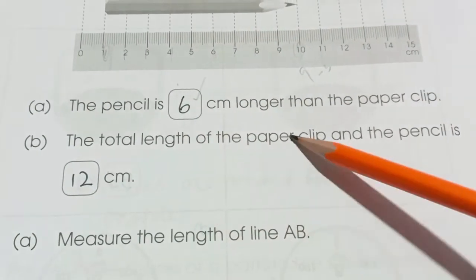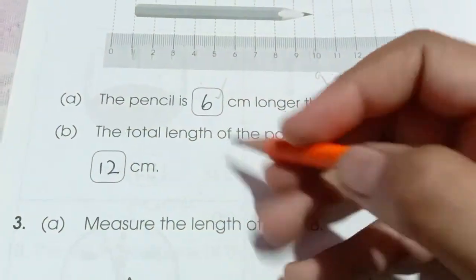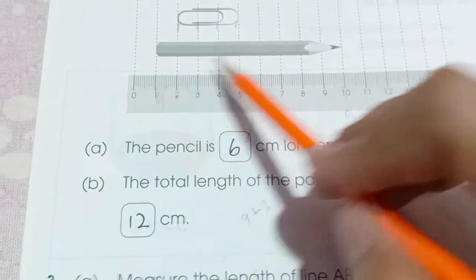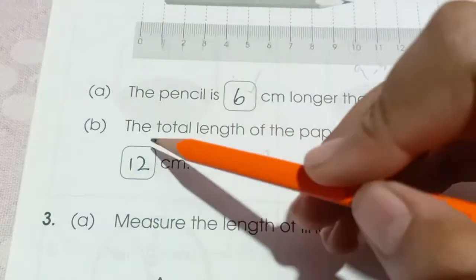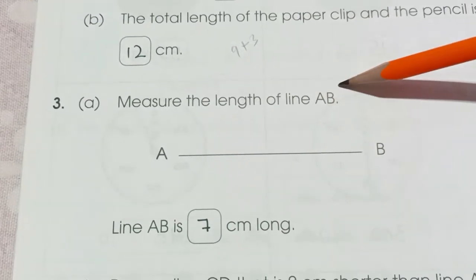The total length of the paper clip and the pencil is 9 plus 3. The paper clip is 3 and the pencil is 9. So 9 plus 3 is 12.